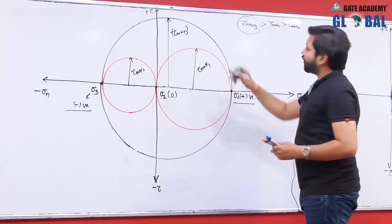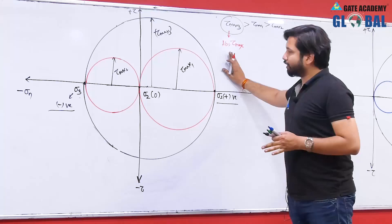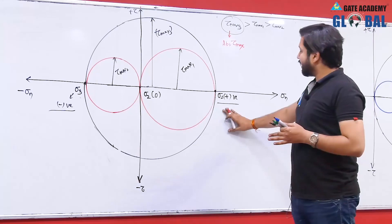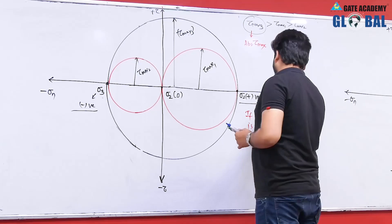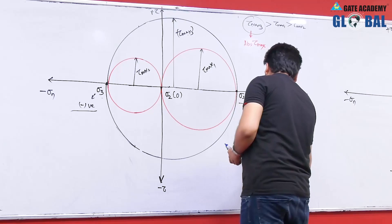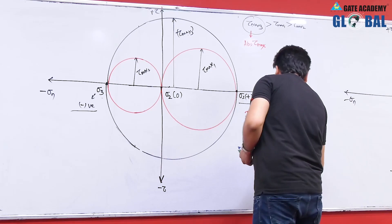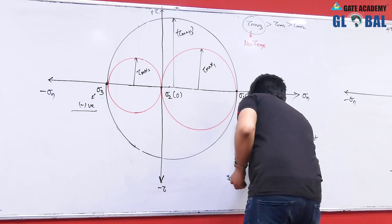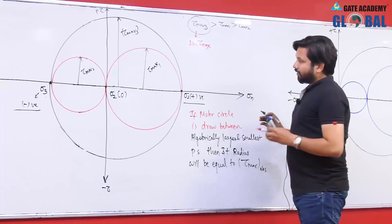The greatest value among all in-plane tau maxima is the absolute tau max. The absolute tau max is obtained as the radius of the Mohr's circle drawn between the algebraically largest and smallest principal stresses. If the Mohr's circle is drawn between the algebraically largest and smallest principal stress, its radius equals the absolute tau max.